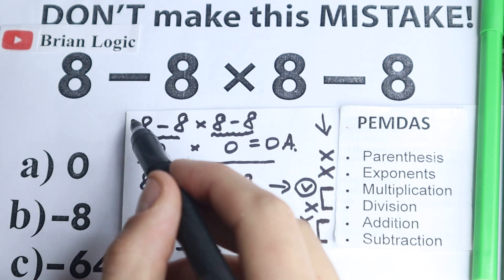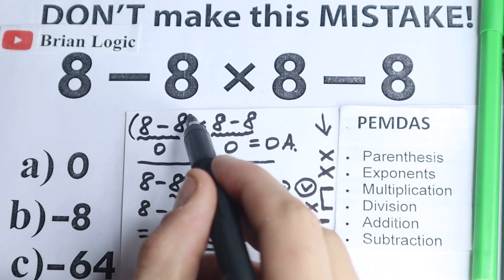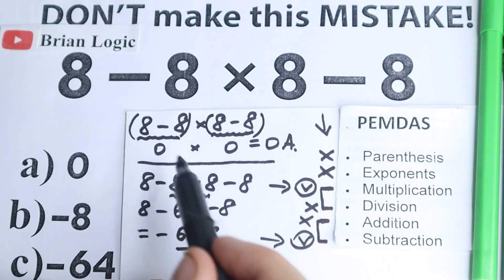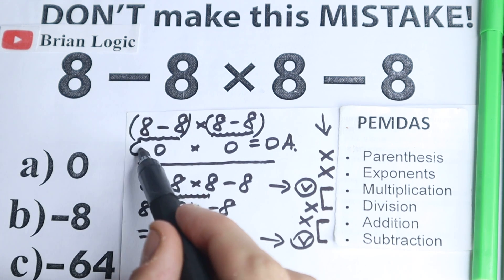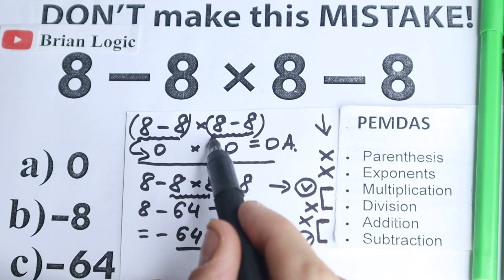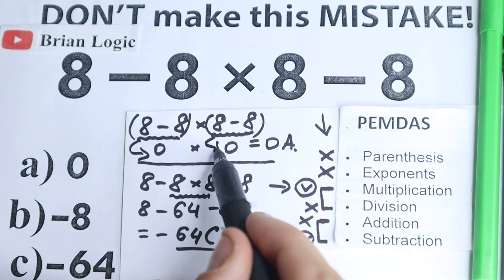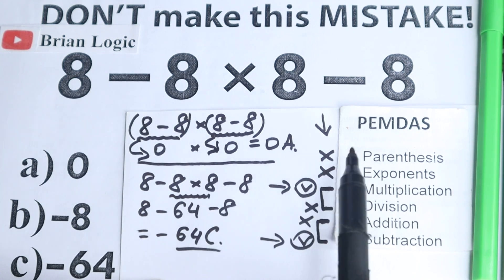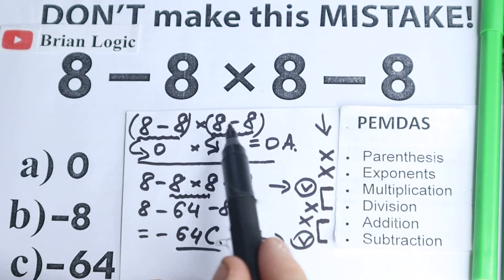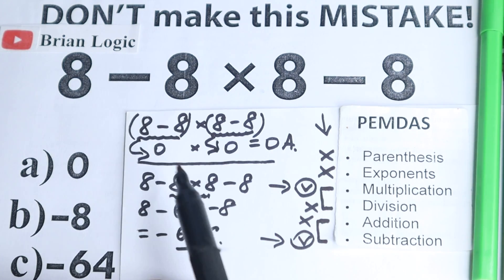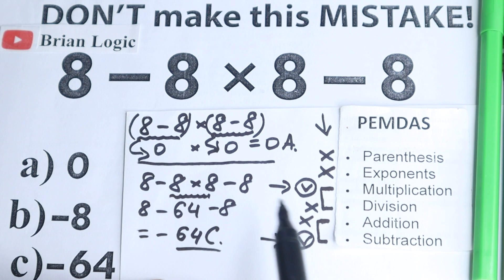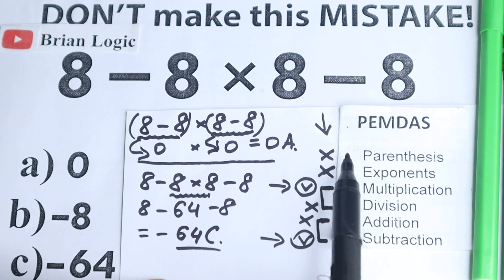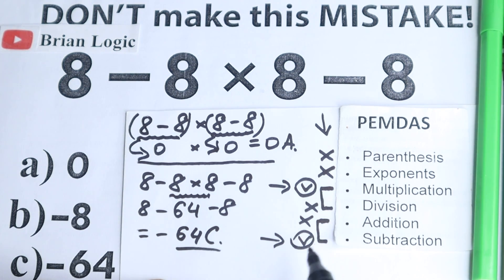However, with parentheses the situation changes. If you have parentheses — like (8 minus 8) times (8 minus 8) — then 0 is a correct answer, because parentheses is the first step and we start with the subtraction inside them.